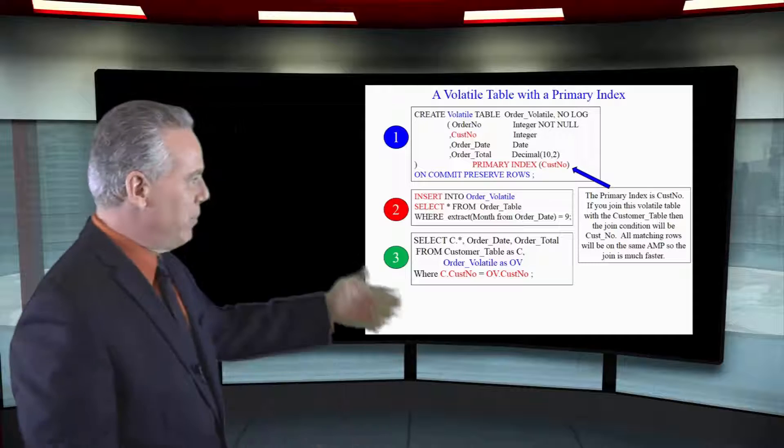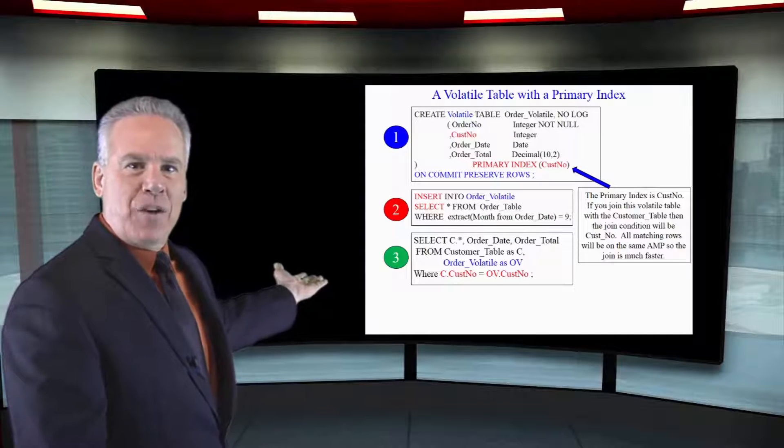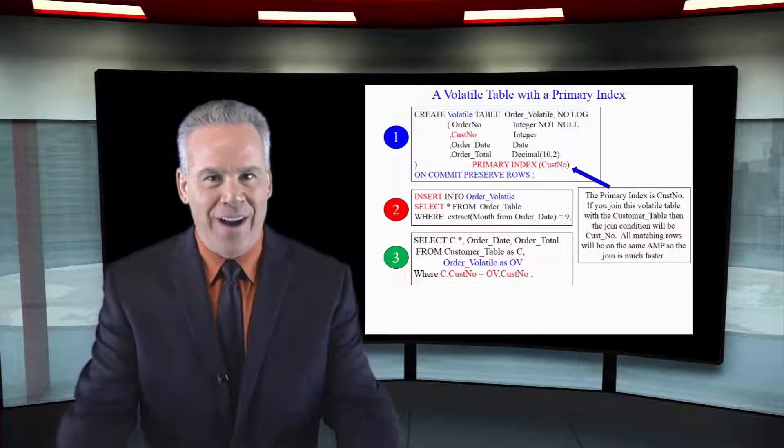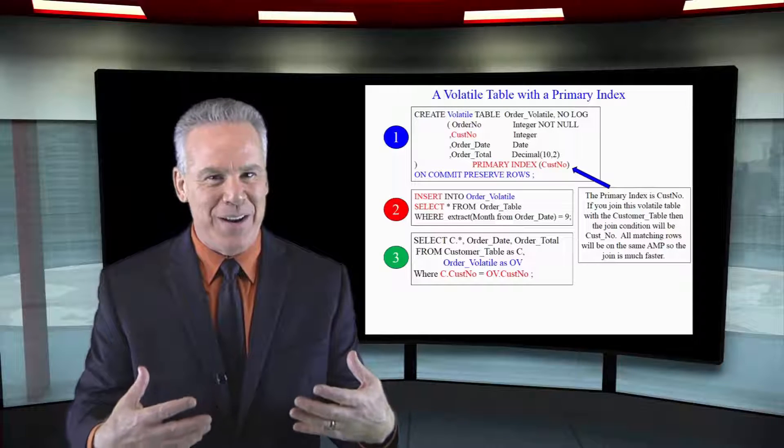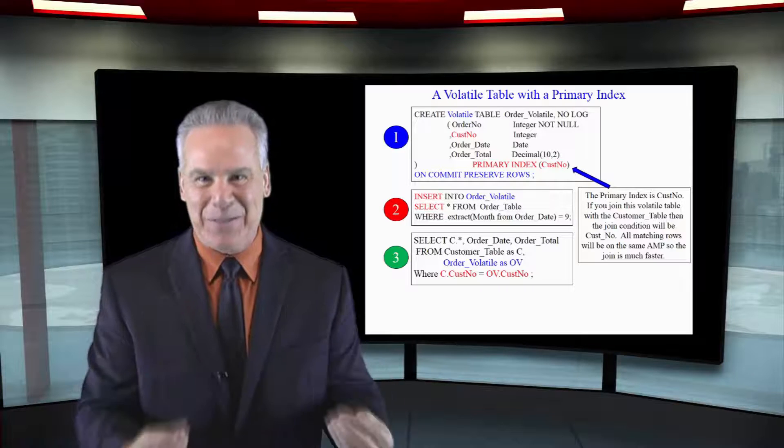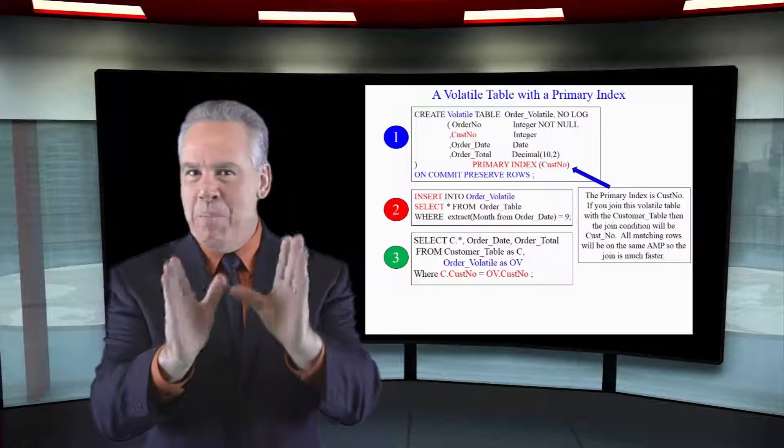I then populate it with the information I need from the order table. When I join it to the customer table on customer number equals customer number, they both have the same primary index of customer number, and this is going to be much faster.